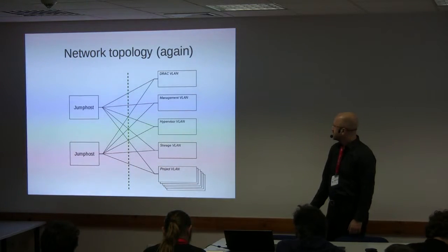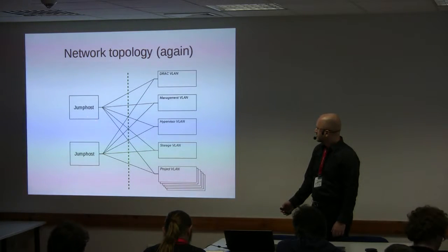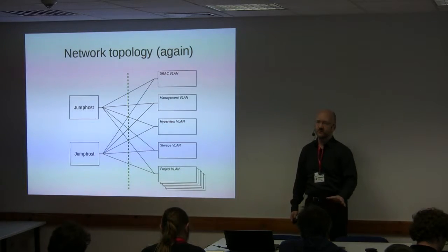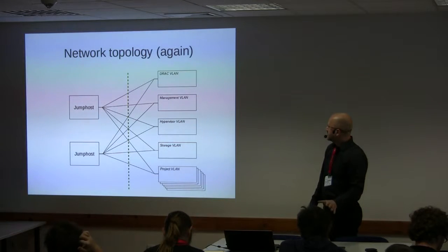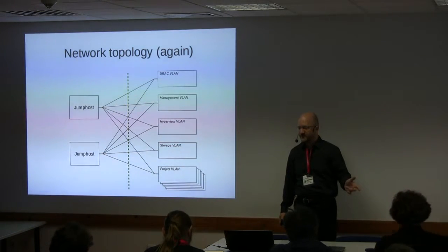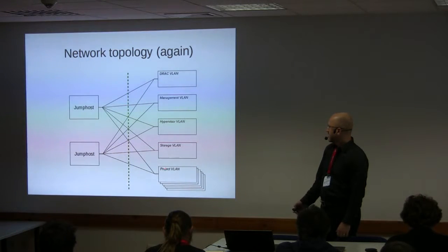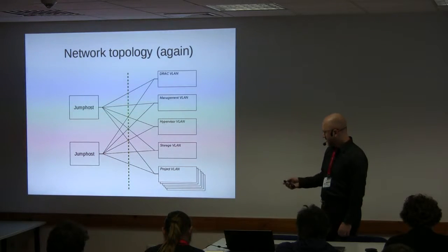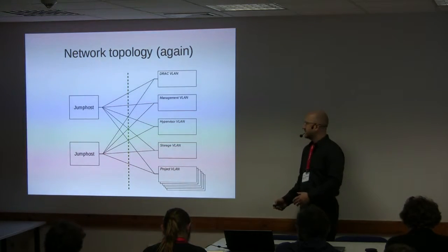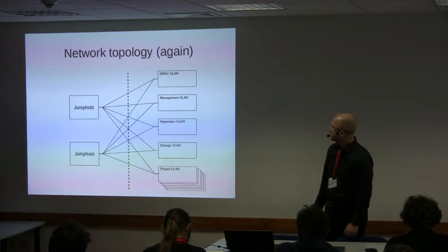Back to the network topology: we have the jump hosts and a few more VLANs not mentioned earlier — a separate VLAN for DRAC serial consoles for all physical hardware, the management VLAN, storage VLAN, hypervisor VLAN for Red Hat Enterprise Virtualization host nodes, and project VLANs. All traffic between each project and anything else in the system is routed through the jump hosts, which can monitor and control that traffic with a very fine-grained packet filter.